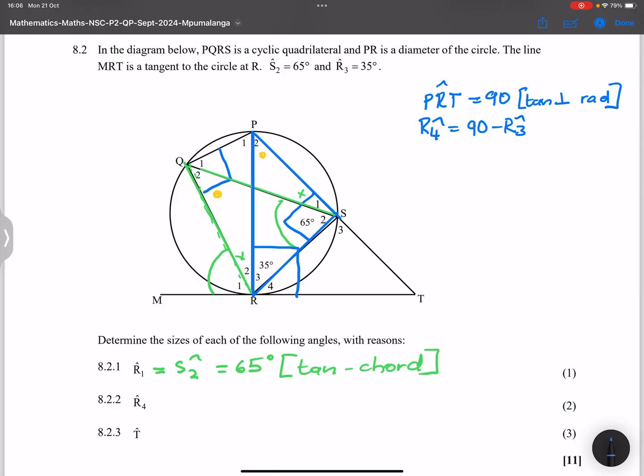So in that case, that means that R4 would be equal to 90 minus 35. Remember that R3 was actually given. So 90 minus 35 would give us 65 degrees. So that's the value of R4. That is 65 degrees, and we found it in that way.